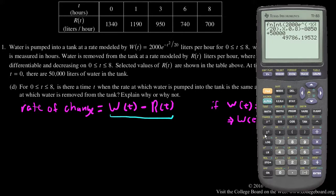So here, w of 0 is 2000 times e to the 0, which is going to be 2000.